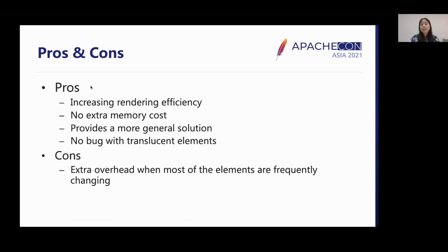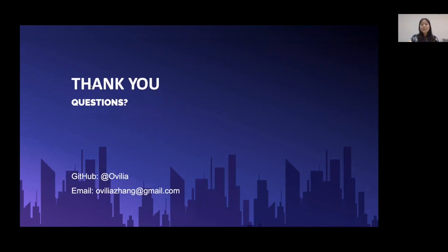In conclusion, using dirty rectangle rendering can be an effective solution for scenes with a small changing area. There is no extra canvas layer, so there is no extra memory cost, and it is a more general and correct approach that does not have the problem of translucent elements. The disadvantage is that for scenes where most elements are changing frequently, there is more extra overhead due mainly to looping over all elements. Therefore, dirty rectangle rendering is disabled by default in eCharts and can be enabled when developers find it necessary. That's all for my speech today — if you have any questions, welcome to ask me now or send me an email. Thank you.